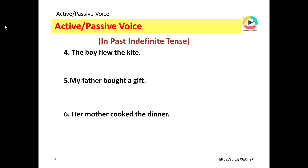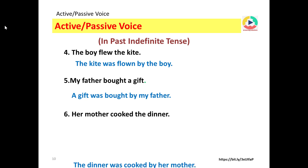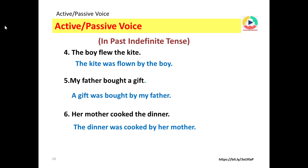In past indefinite tense: the boy flew the kite — passive voice: the kite was flown by the boy. My father bought a gift — passive voice: a gift was bought by my father. Her mother cooked the dinner — passive voice: the dinner was cooked by her mother.